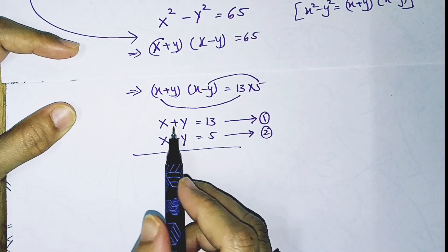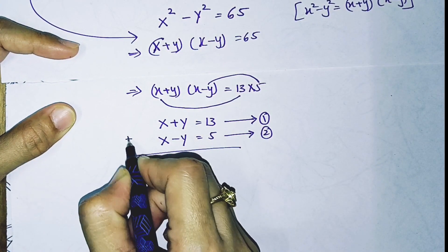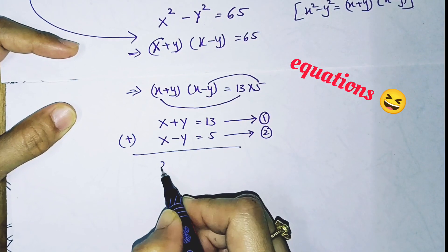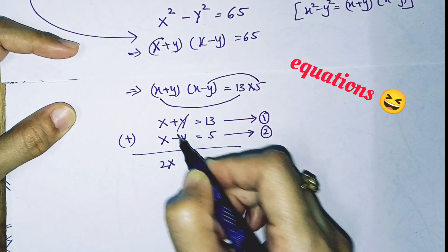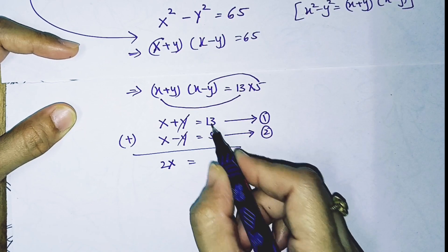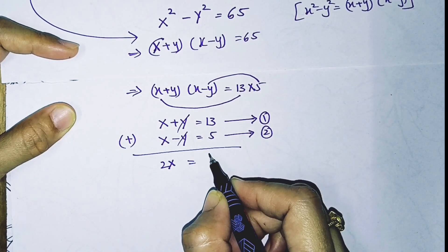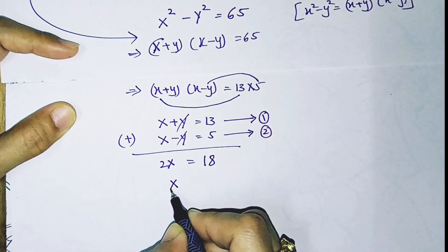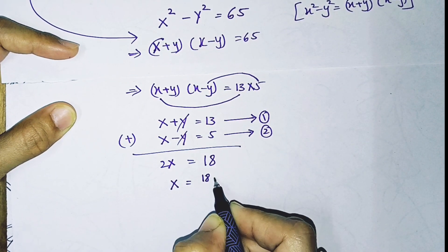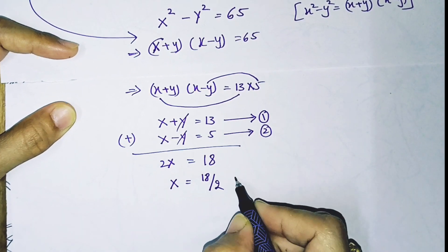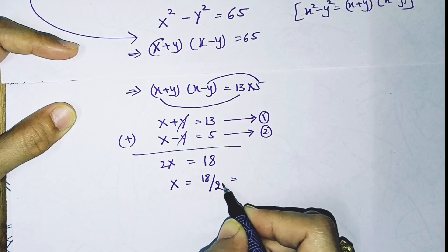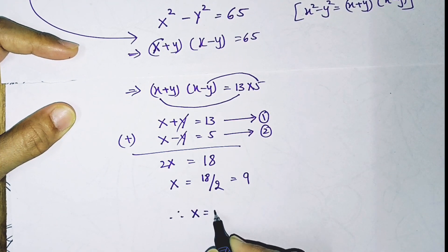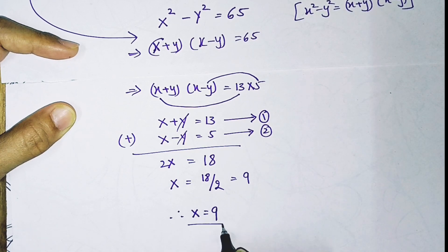Adding the two equations, the y terms cancel: 2x = 13 + 5 = 18, so x = 18 ÷ 2 = 9. Therefore the value of x is 9.